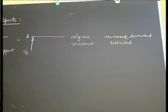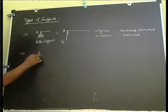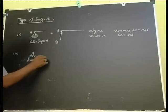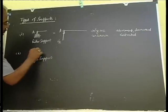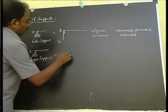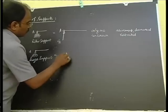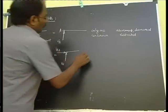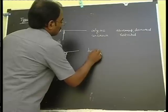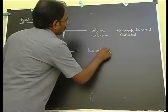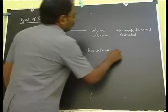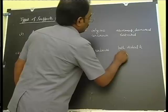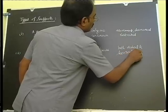Second one is hinge support. It has two components: one is vertical component, the other one is horizontal component. Two unknowns are there in this support. Both vertical and horizontal movements are restricted.